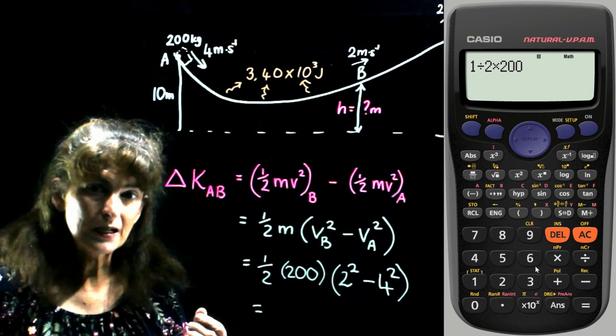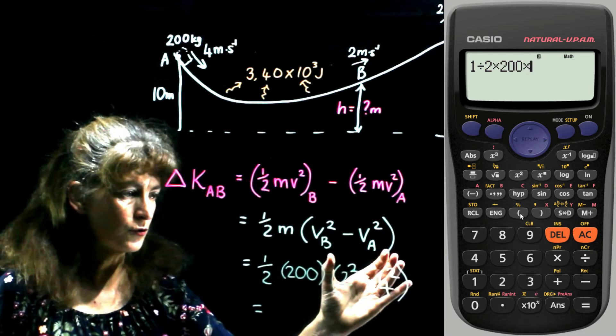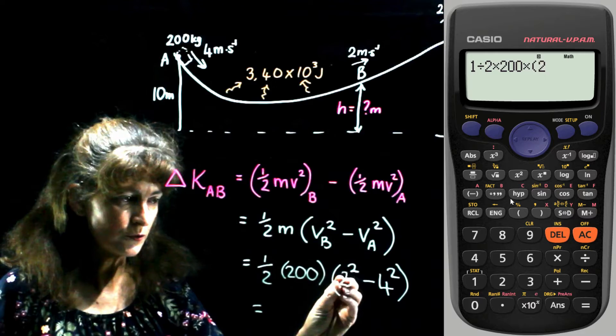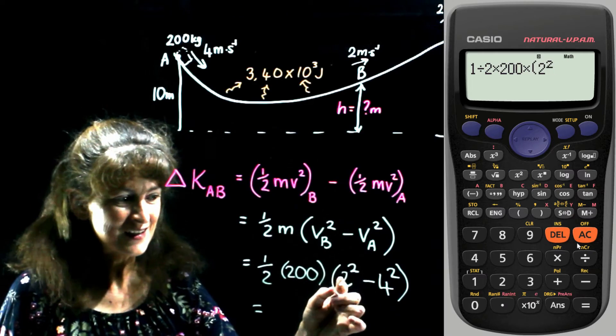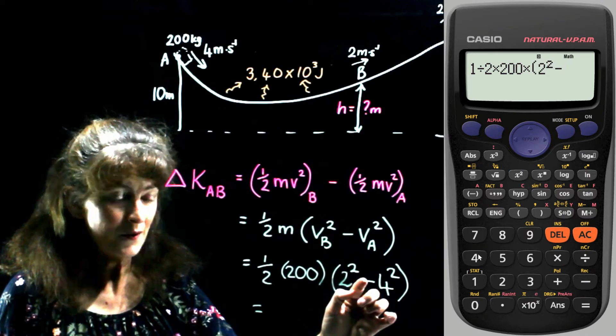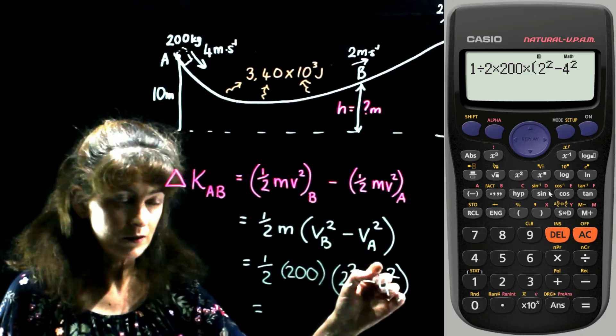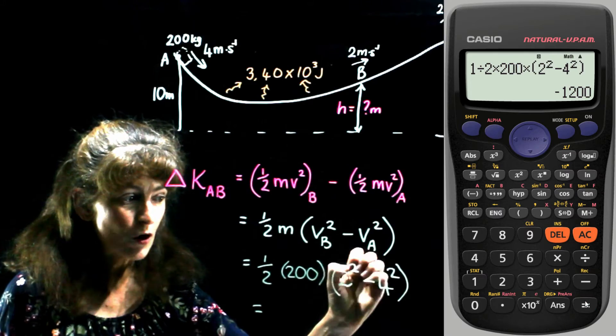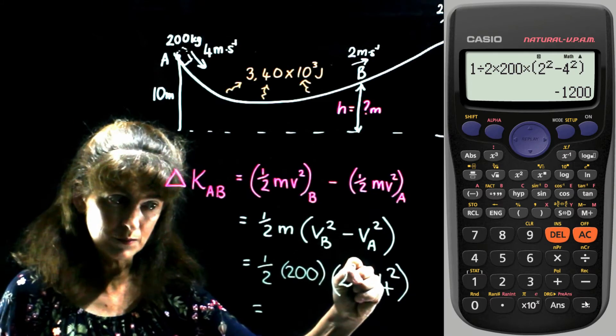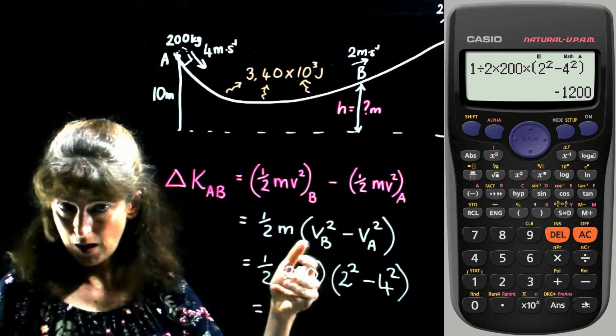Because the calculator will then realize that it must do the brackets first. It must first do the squared. It must do 2 squared and then minus 4 squared. And once it's got that difference, only then multiply that by 100.